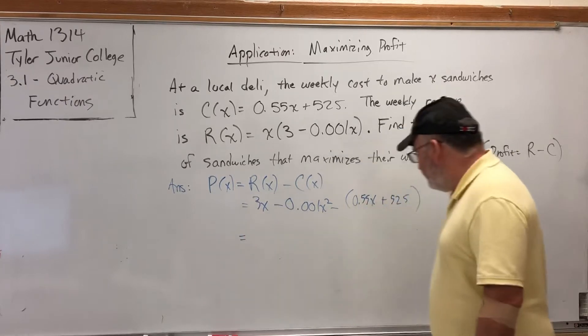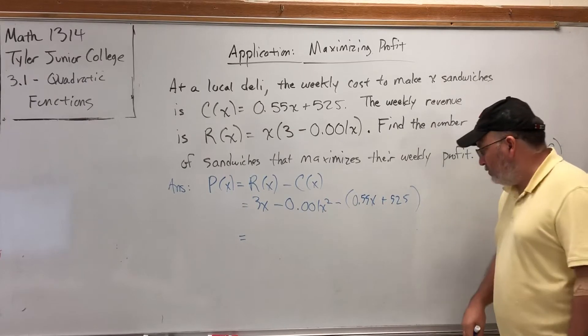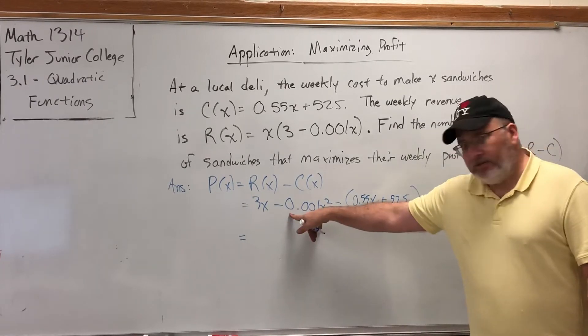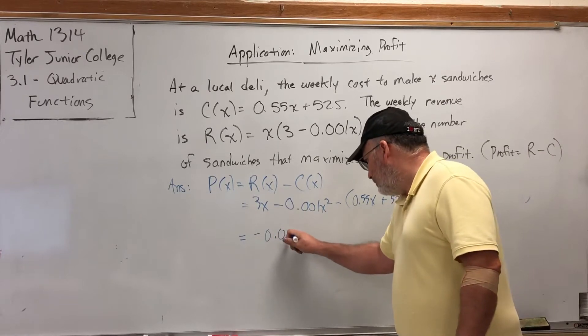So let's do two things: distribute this minus across the second function and combine like terms. This is our only quadratic term. So negative 0.001X squared.